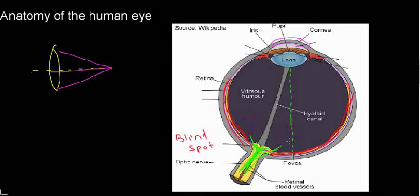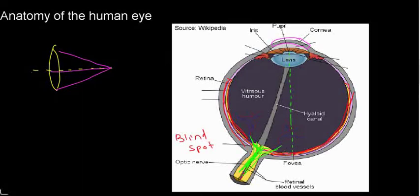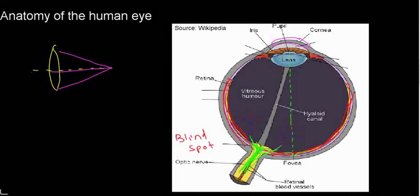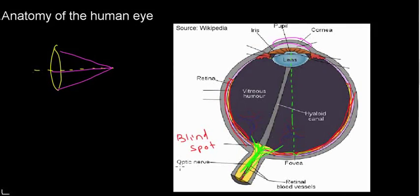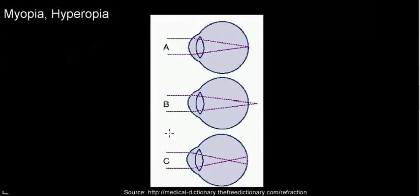That convergence point is called the fovea centralis. There's a slight indentation there, and we'll come back to it. These are the very basics we need to keep in mind as we move on to discuss myopia and hyperopia, which they do like to ask about because it pertains to the lab work.